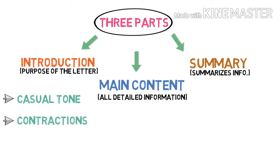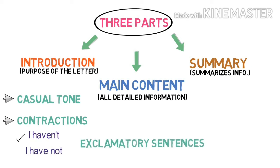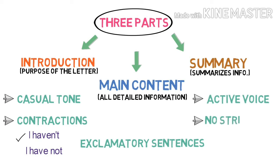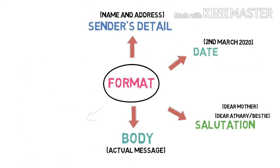While writing this informal letter, you have to write in a casual tone — casual tone mane apas mein jo baat karte hai na, waisa likhna hai. Aur isme contractions bhi use kar sakte hai — jaise 'have not' ko 'haven't' likhte hai, 'is not' ko 'isn't' likhte hai. Exclamatory marks bhi use kar sakte hai — exclamatory sentences for sudden surprises. Phir usko active voice mein, that is present form mein likhte hai. Aur isme koi strict rules nahi hai — we can write the letter in one paragraph also.